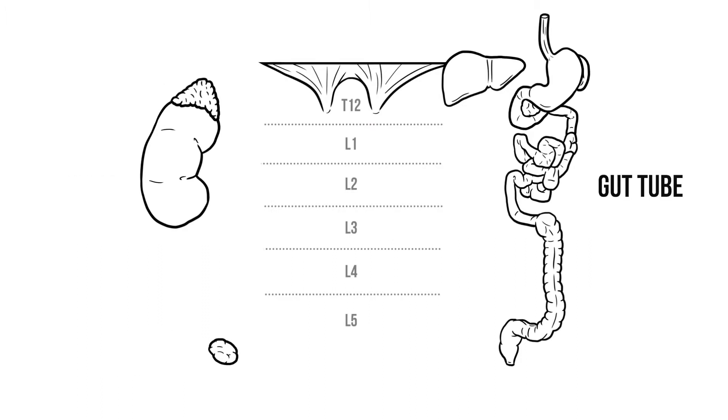On the other side is the gut tube, the channel that runs from mouth to south taking food through the body and digesting it along the way.